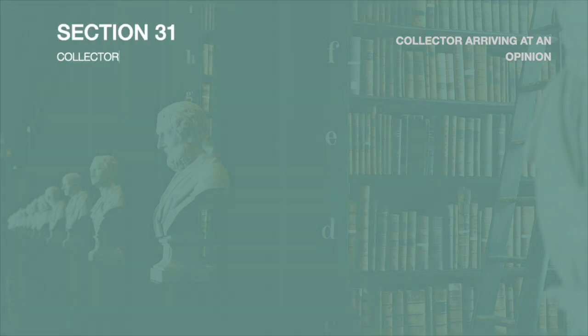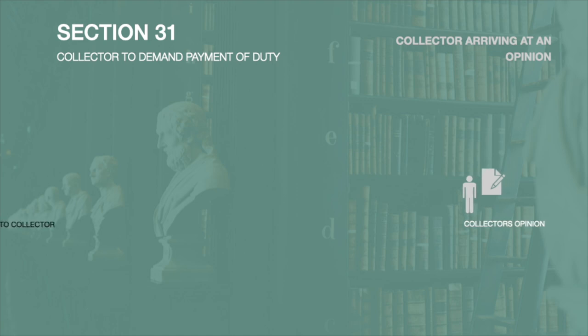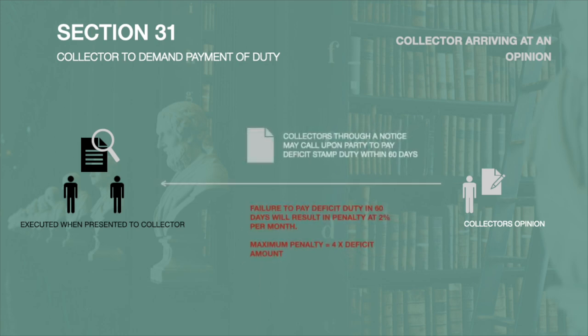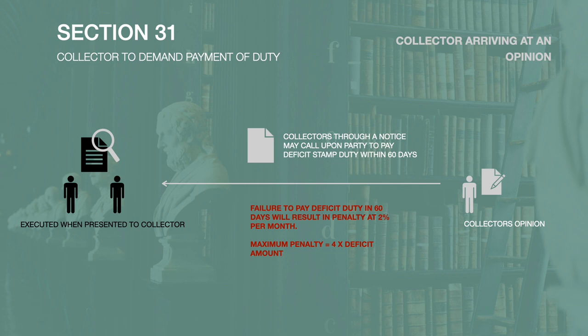In case the document being adjudicated is already executed and falls within the criteria of section 31, subsection 4, then if any deficit stamp duty is observed, the collector may demand the same through a written notice from the person on whom duty is leviable as per section 30. If such person fails to pay the deficit stamp duty within a period of 60 days, then such person shall be liable to pay a penalty on such deficit amount at a rate of 2% per month.